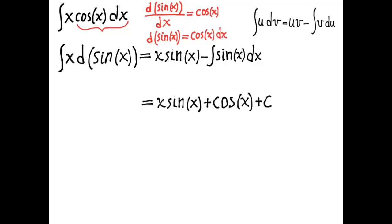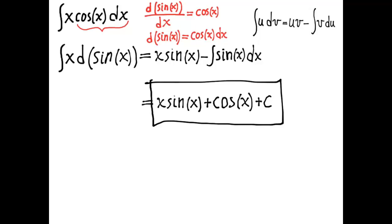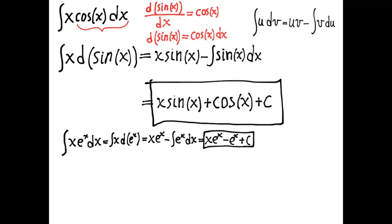The answer is x·sin x plus cos x plus C. If you differentiate that, you get back to the original integrand. One more example: the integral of x·eˣ dx. We use eˣ dx equals d(eˣ), apply the integration by parts formula, and it turns into an easier integral. Again, differentiate the result to check.